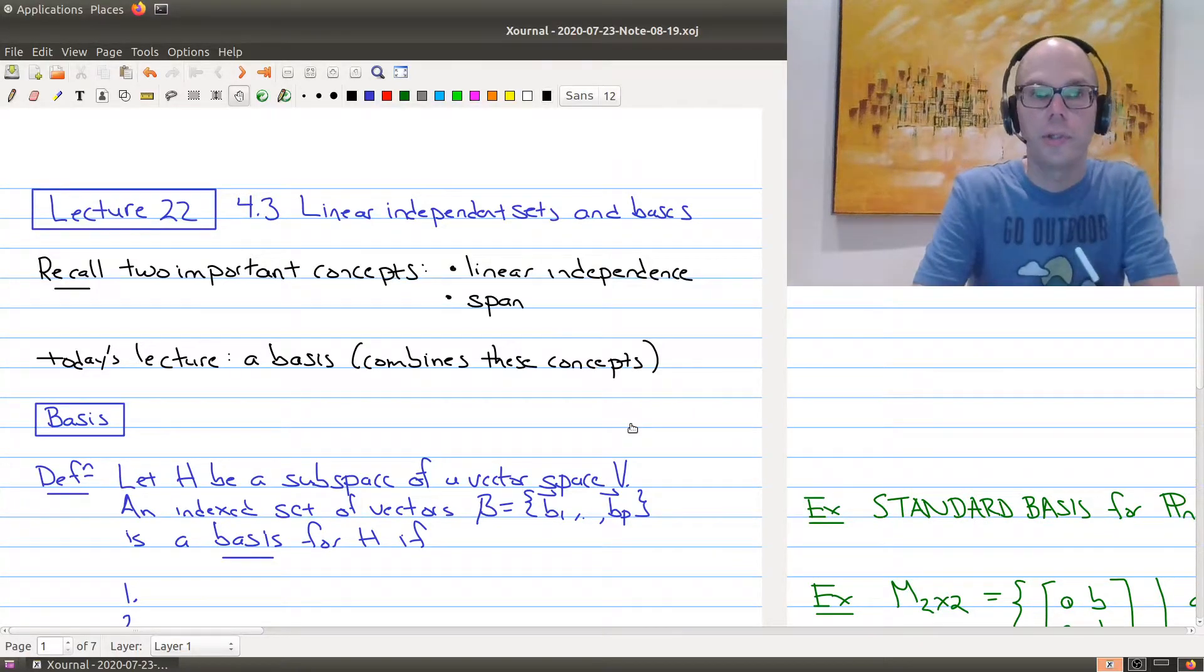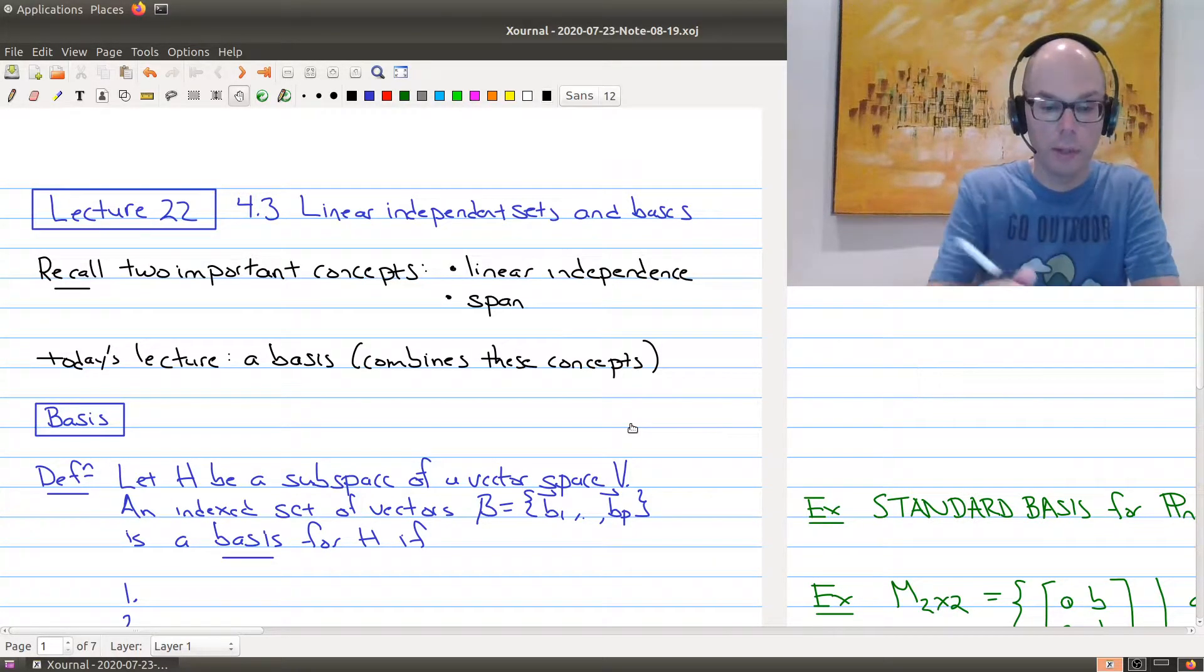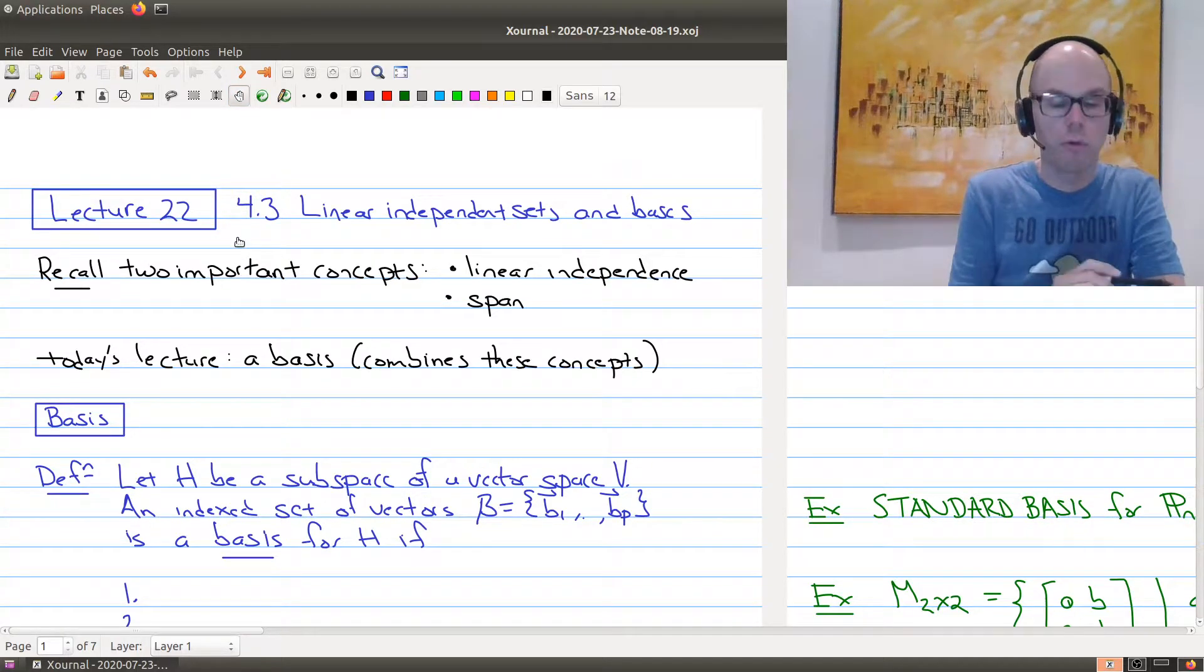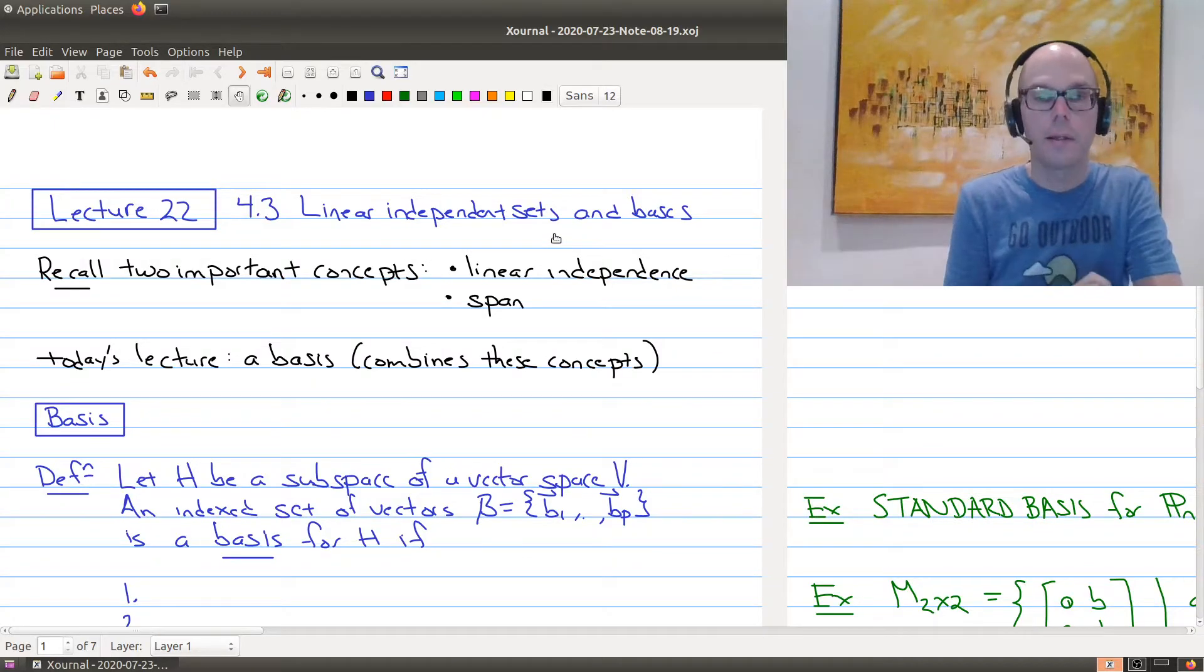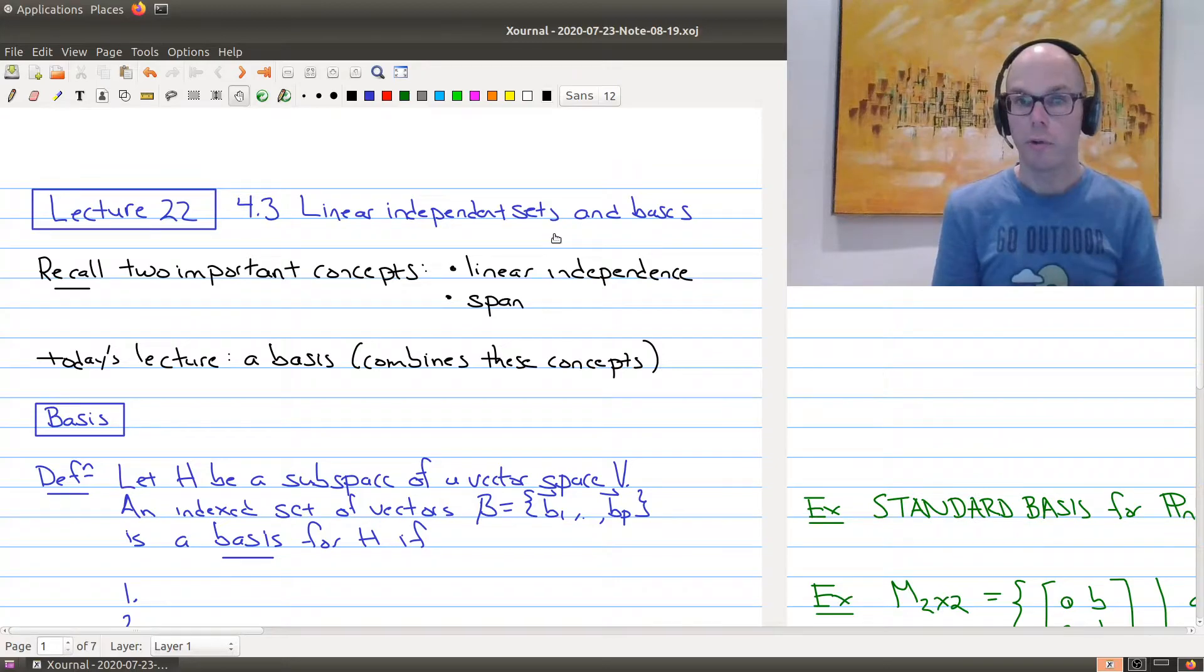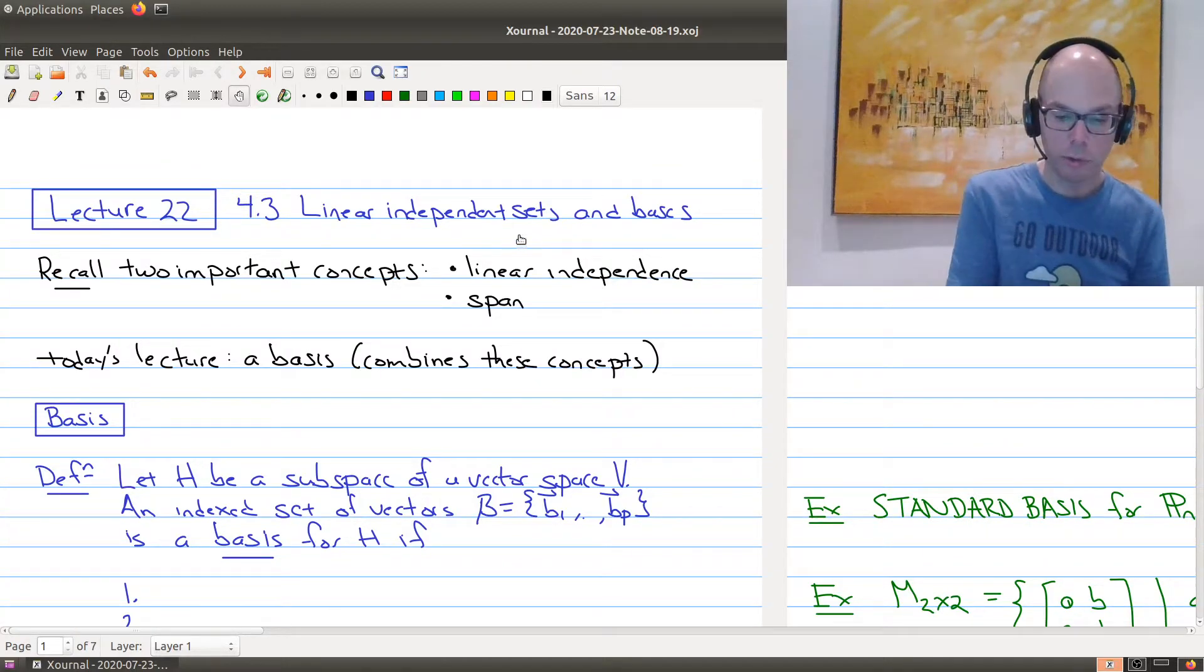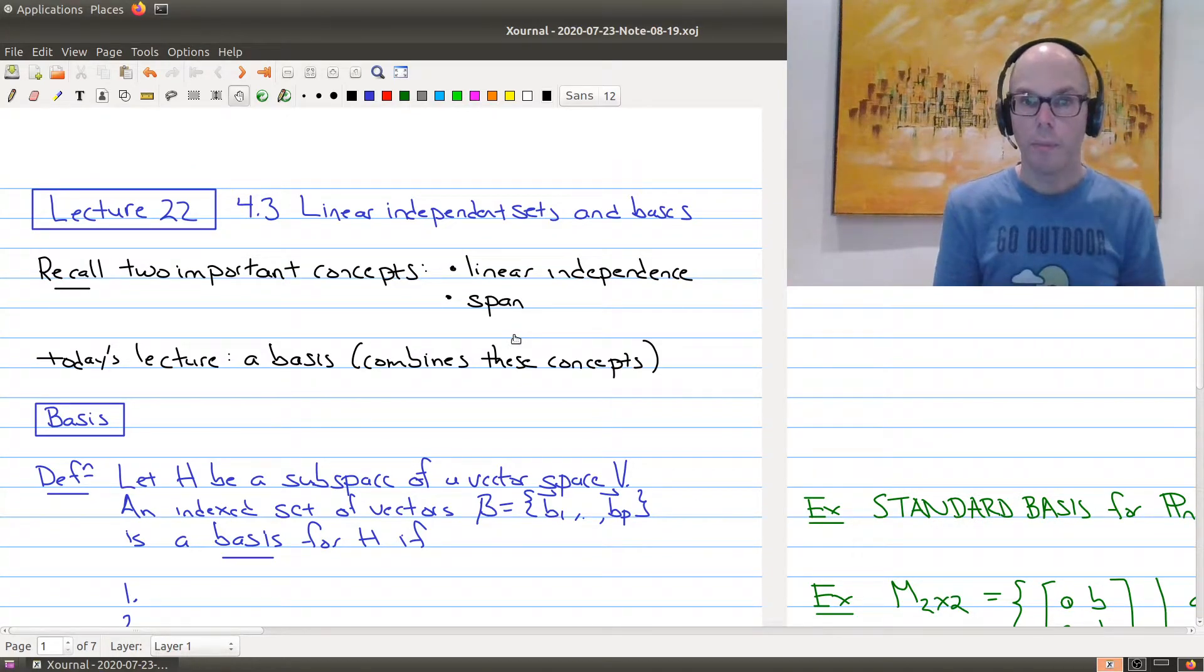Hello and welcome to lecture 22 of Math 1B03. In today's lecture we're going to be looking at section 4.3 of the textbook on linear independent sets and bases. So in the last couple lectures we've looked at two important concepts in linear algebra. When describing a vector space, we've looked at the notion of linear independence and span. Just to keep in mind, we first talked about these concepts in R^n and now we're trying to generalize these concepts to an arbitrary vector space.